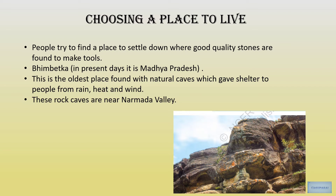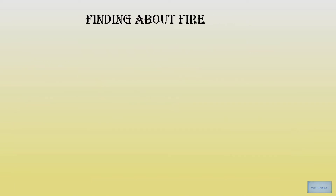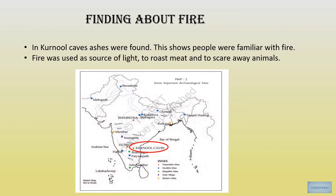These rock caves are near the Narmada Valley. Many caves in these places had paintings on the walls. Some of the best examples are from Madhya Pradesh and southern Uttar Pradesh, showing wild animals drawn with great accuracy and skill. The Kurnool caves were found with ashes, showing people were familiar with fire. Fire was used as a source of light, for roasting meat, and to scare away wild animals.